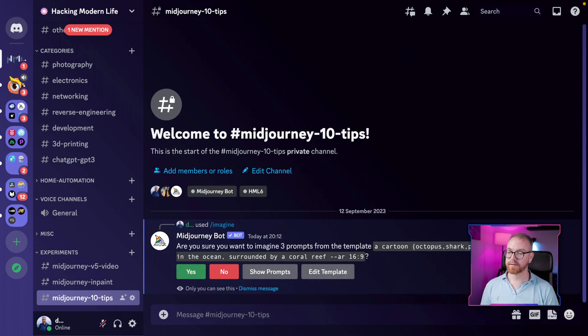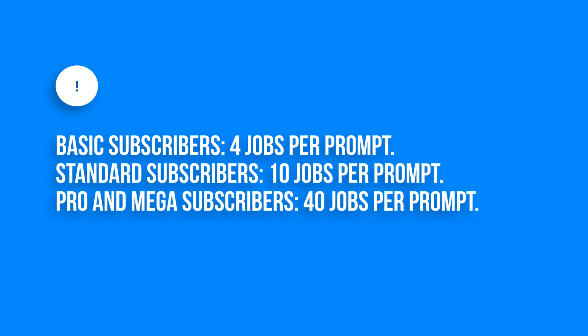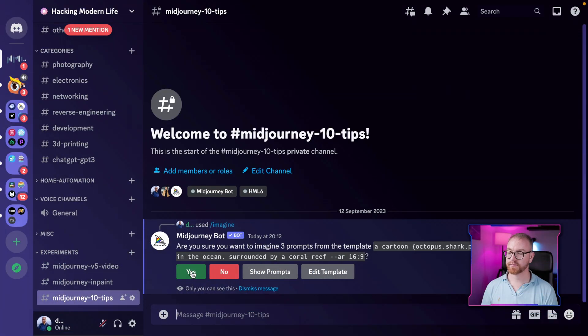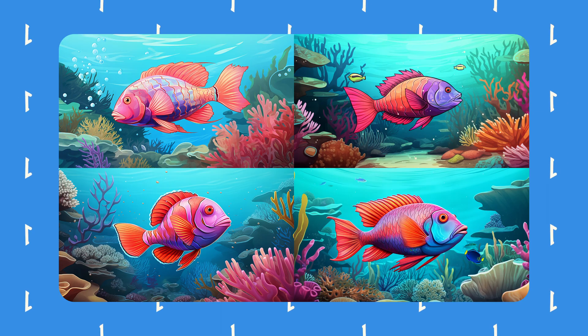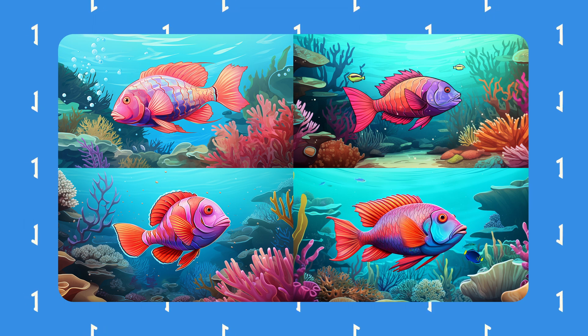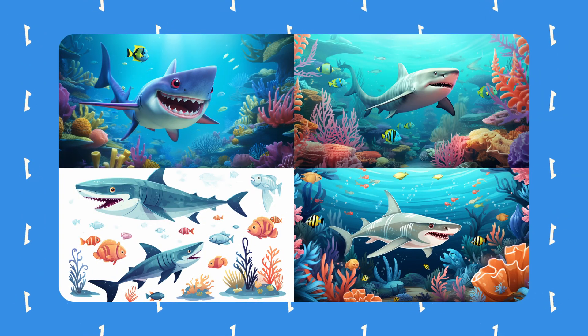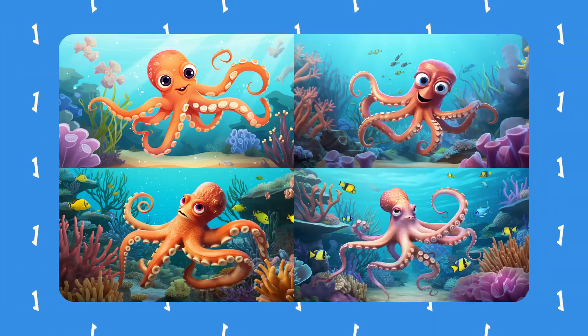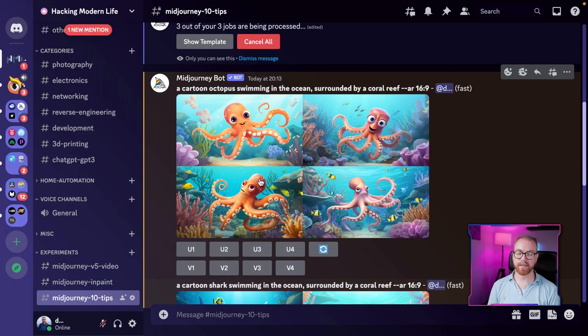MidJourney will tell you that it will generate three different images. Keep in mind the limitations: basic subscriptions can run up to 4 jobs at once, standard subscribers can create up to 10, and pro and mega subscribers can create 40 jobs with a single permutation prompt. So here we have the parrotfish, a cartoon shark, and a cartoon octopus — all swimming in the ocean and generated at the same time.